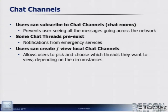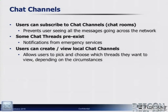Let's talk about chat channels. Users should be able to subscribe to chat channels — think of them as chat rooms. That prevents users from seeing all the messages across the network, so you don't get a flood of information, just what you want. You also need pre-existing chat threads in the app so you can receive information from emergency services and know it comes from authoritative individuals. Users should be able to create and view local chat channels as needed — the ability to create them on the fly is critically important, especially for revolutionary activity. If users want to relay information about an event they just saw, they create a chat channel, people will see it on their phone and subscribe, and their phones will continue to push that information on.